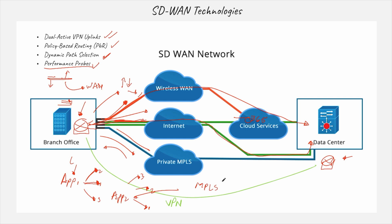So here you can see all four elements working together: performance probes running continuously to collect metrics, dynamic path selection choosing the best path based on those results, policy-based routing letting you define rules and route traffic accordingly, and dual active VPN uplinks ensuring you have more than one active VPN tunnel for redundancy and load balancing. These are the four main SD-WAN technologies available in the SD-WAN network.